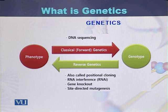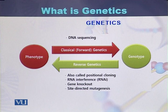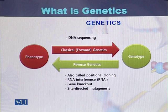Classical genetics is performed by sequencing the DNA. In reverse genetics, the phenotype is identified based on the genotype. Different methodologies are used for studying the reverse pattern of genetics, including positional cloning, RNA interference, gene knockouts, and other methods used to study phenotype based on genotype.